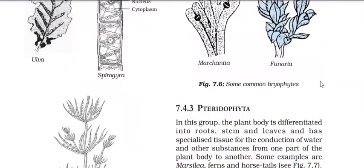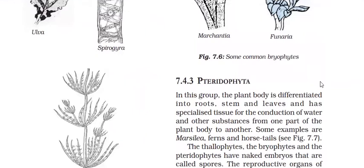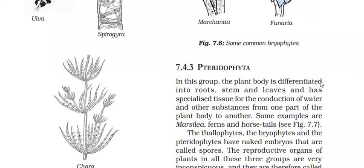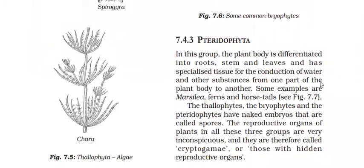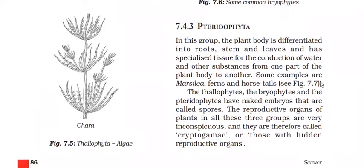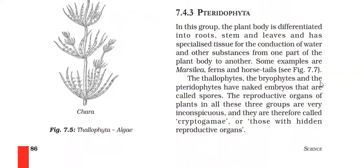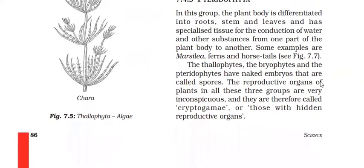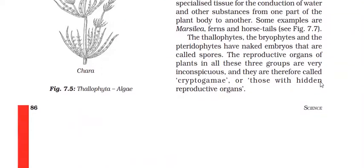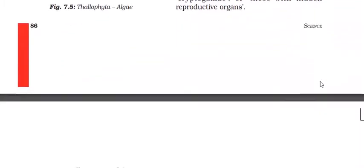The Pteridophytes have a special characteristic feature: the plant body is differentiated into root, stems, and leaves, and they have conducting tissue to transport water and food. Xylem transports water; phloem transports food. Examples include marsilea, fern, and horsetail. Thallophyta, Bryophyta, and Pteridophyta have naked embryos which we call spores. Their reproductive organs are not visible — they are inconspicuous — so these three groups are called Cryptogamae, meaning hidden reproductive organs.